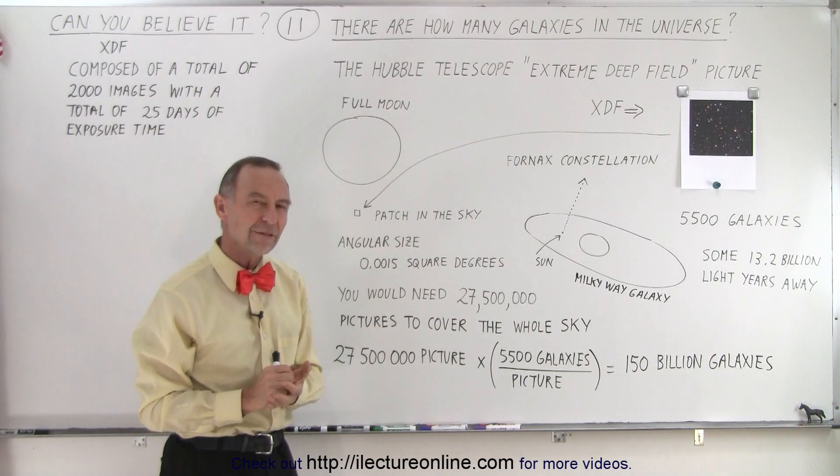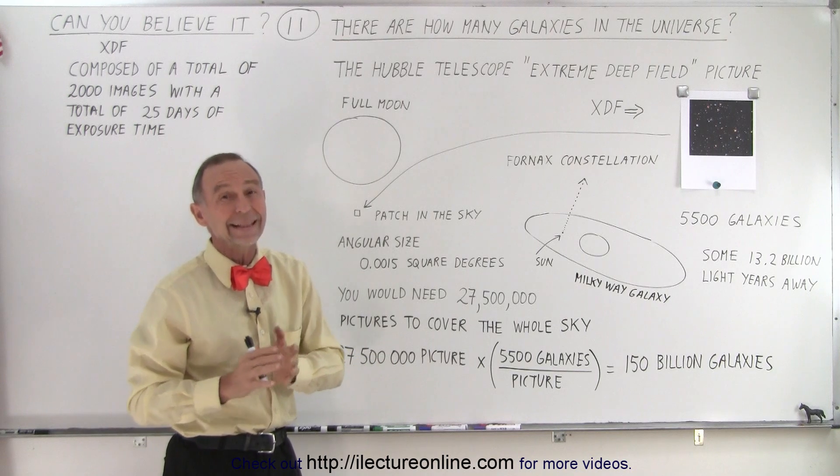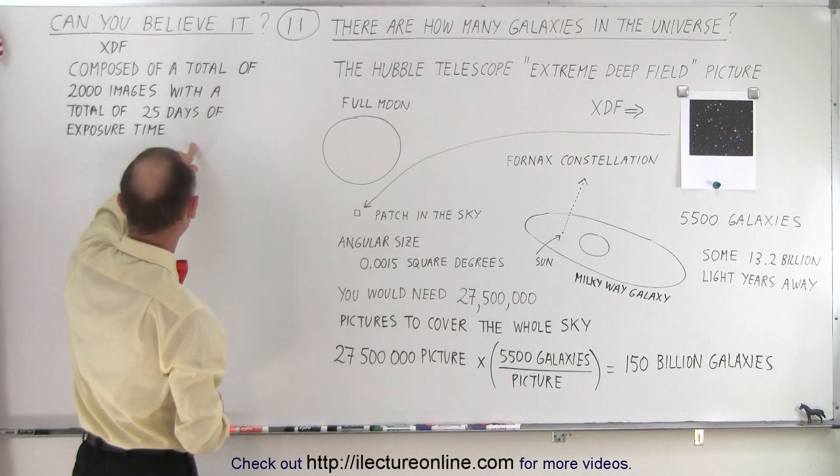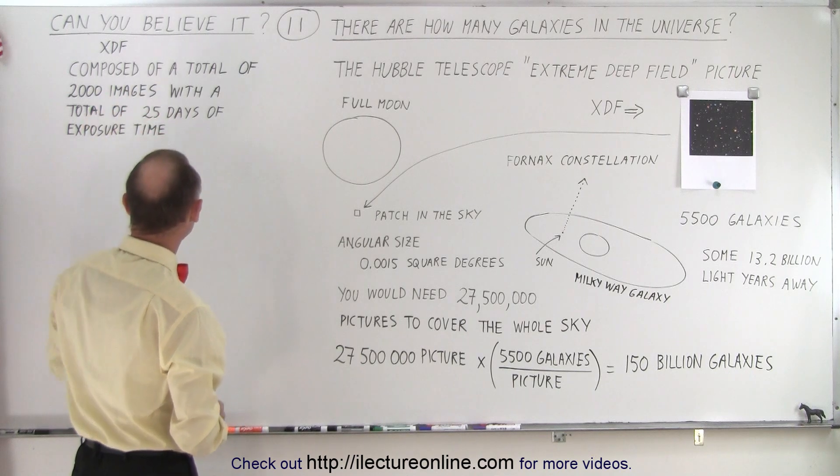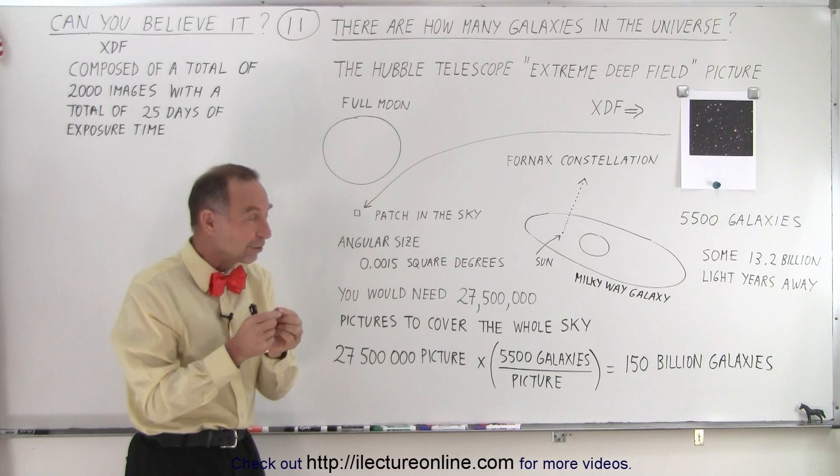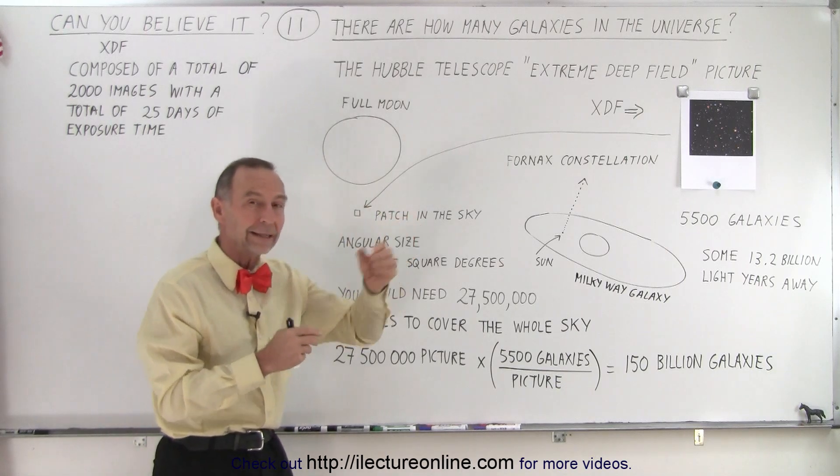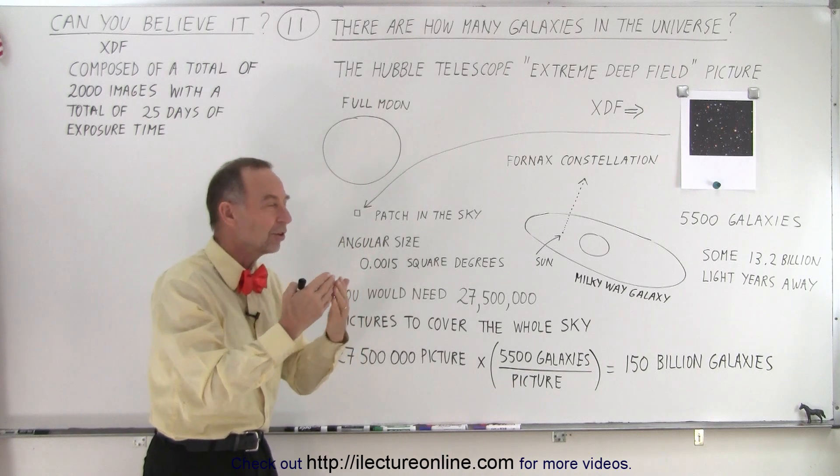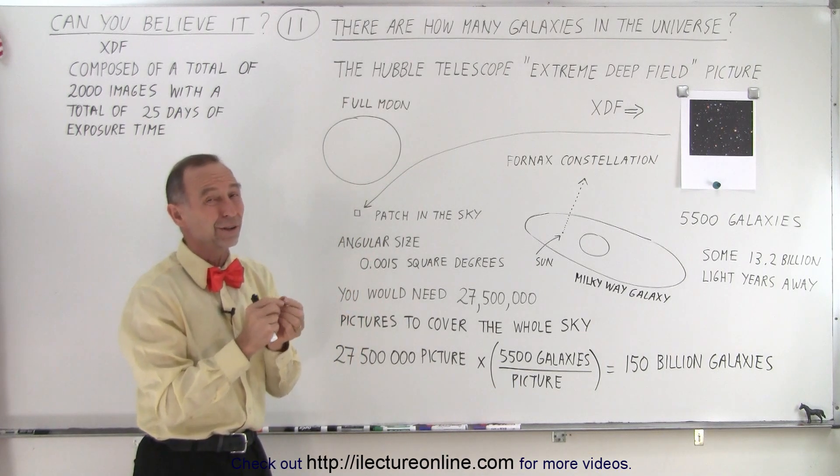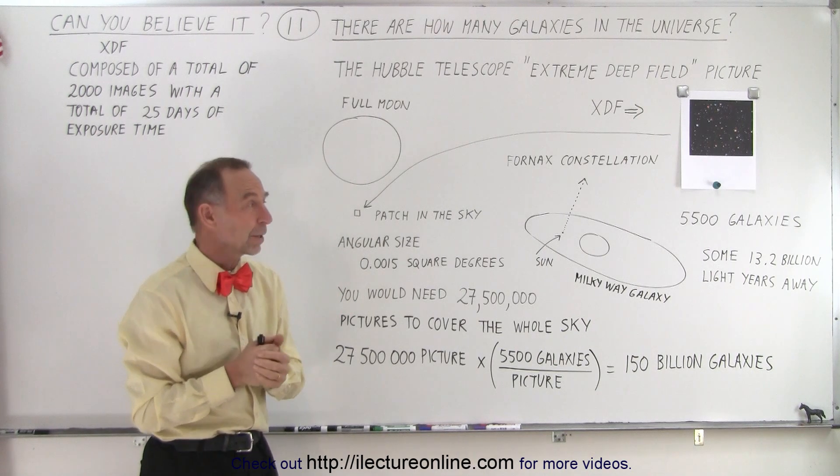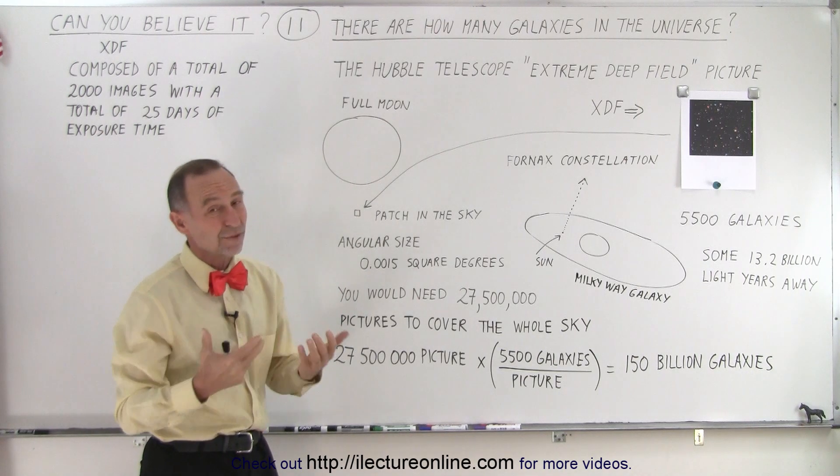But over 150 billion galaxies, and that's at least that many. Of course, that took a long time to take that picture. It's composed of about 2,000 images. Total exposure time, 25 days, because those galaxies are so far away that unless you leave the lens open for many, many hours at a time for each picture, you don't get the light bright enough that you can even see it on the picture.